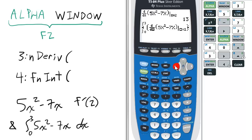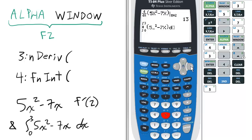But, oh, I made a mistake. Just insert the 5. So we have the 5x squared minus 7x. And then scroll all the way over.